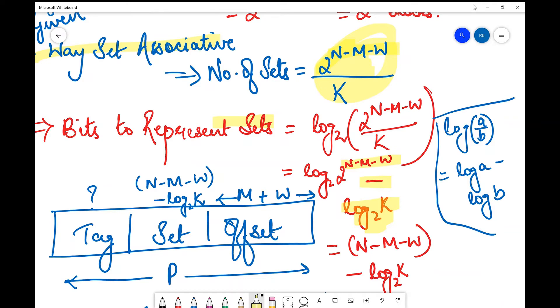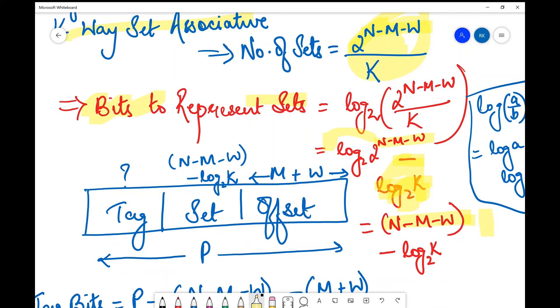This is in the power, so this comes out. Log base 2 of 2 becomes 1, so this is basically (n-m-w)×1, which is n-m-w minus log₂(k). These are the bits that will be required to represent sets.